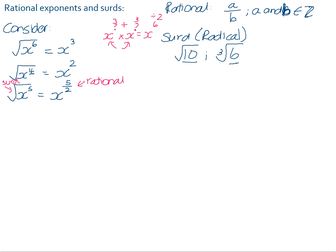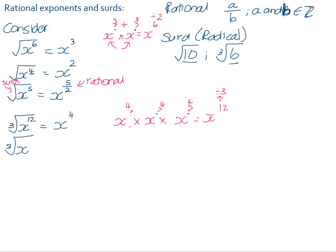If we just look at some cubes — for example, the cube root of x to the power of 12. If we want its cube root, we're now looking for a number that we've multiplied together by itself 3 times in order to get x to the power of 12. So we're going to need to divide the exponent by 3 in order to find out what it was that we added 3 times to get 12, so it will be x to the power of 4. The cube root of x to the power of 12 is x to the power of 4. Similarly, if the exponent is not a multiple of 3 — for something like x to the power of 7 — we would simply take 7 and divide it by 3. So we get x to the 7 over 3, which is exactly the same as the cube root of x to the power of 7.